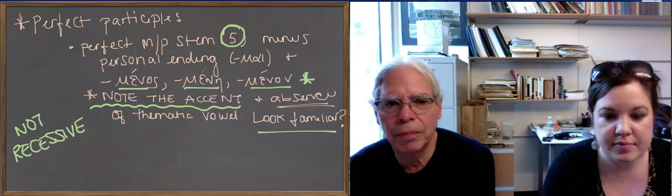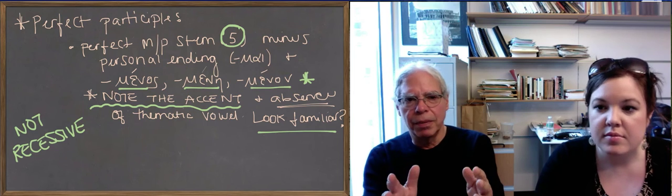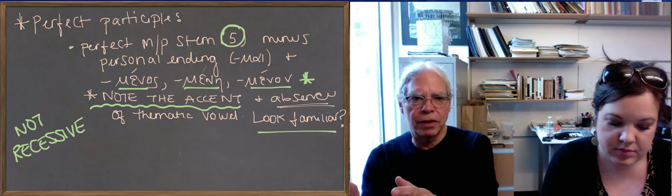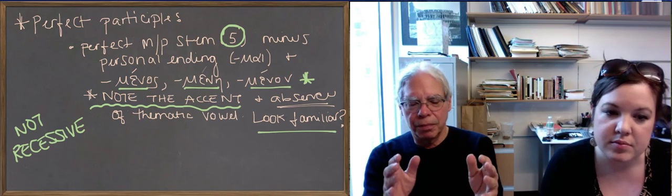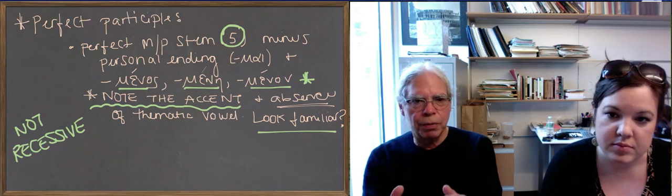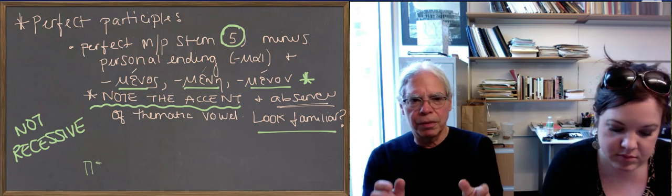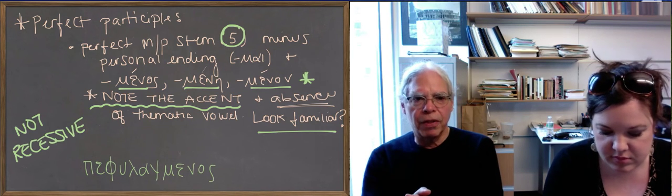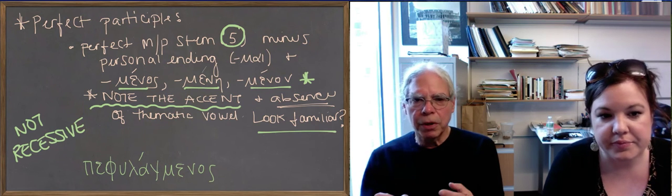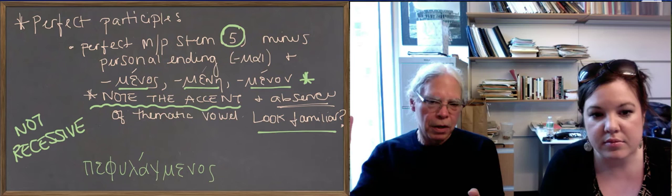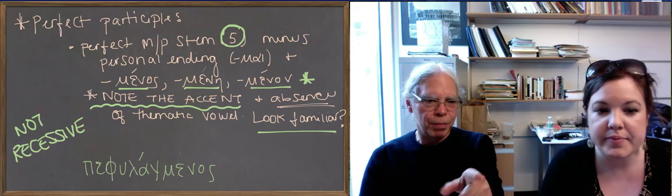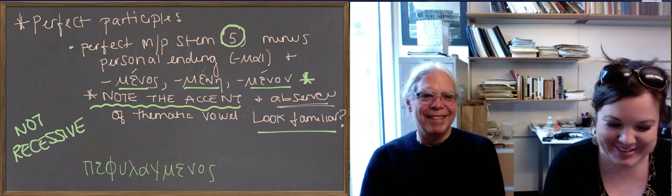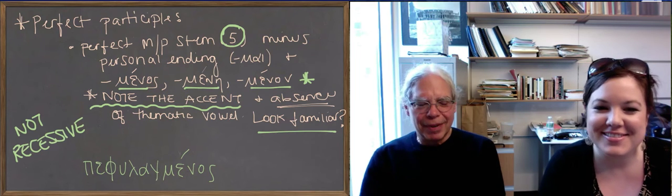Okay, so because of that confrontation between the end of the stem, and there's no thematic vowel, and then you have a menos suffix, you're going to have funny things that happen, but they're the same funny things that happen in the fifth principle part. So for example, if you look at pephulagmai, when you take off the mai, you get pephylagmenos. So our rule really works. If you start with that principle part, you remove the mai, and you add the menos, you're done. But you put the accent in the wrong place. Pephylagmenos. Oh, yeah. Perfect. Just kidding. Just testing you guys.